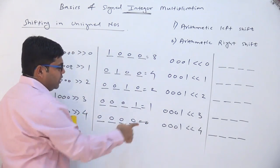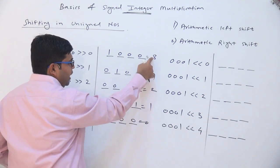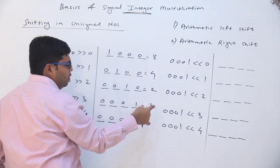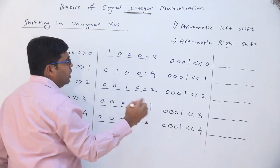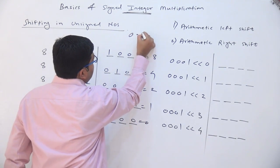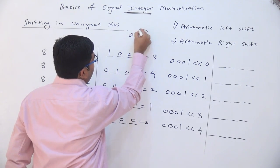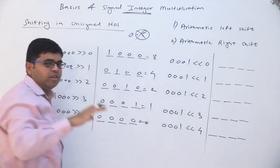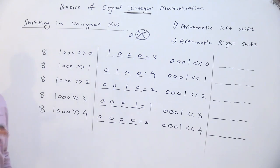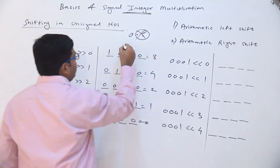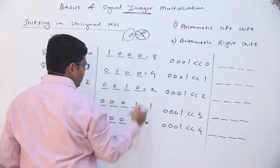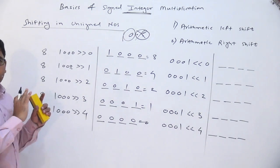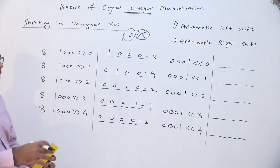We are left with only 0. To restate: 8 divided by 2 is 4, divided by 2 is 2, divided by 2 is 1. 1 divided by 2 should be 0.5, but 0.5 cannot be represented in integer. Therefore the decimal part will be truncated and you will be left with only the integer part, which is equal to 0. That is what happens in case of right shifting.